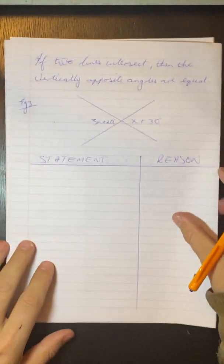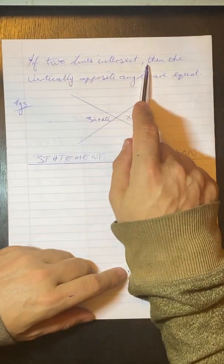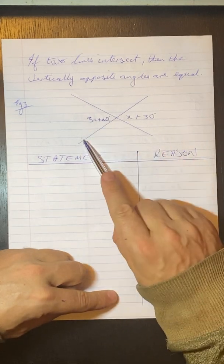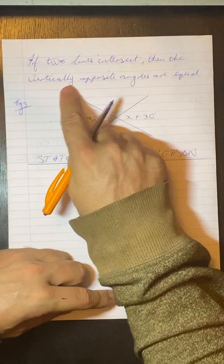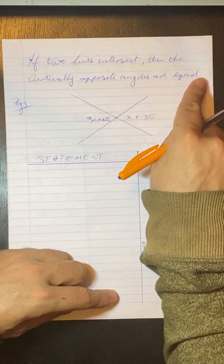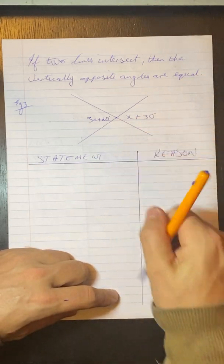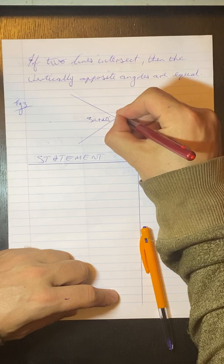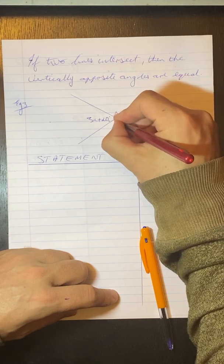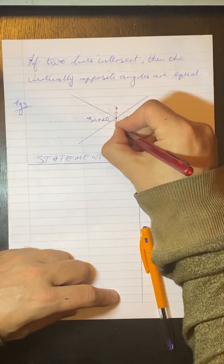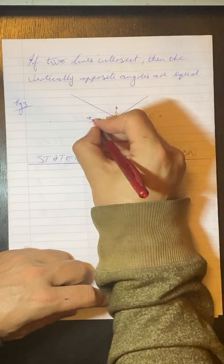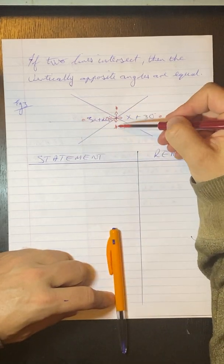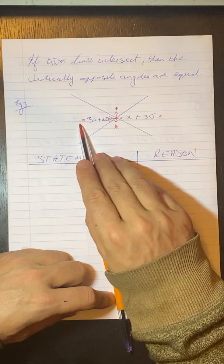Okay, going on to the last one. If two lines intersect, so here's our two lines, there's our one line, there's our other line, and intersect means that they cut like that, then the vertically opposite angles are equal. So vertically opposite means we have these two are vertically opposite, and these two are vertically opposite. So that means that these two will be equal, those two will be equal.